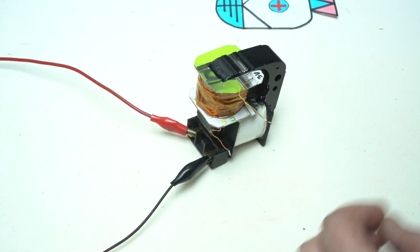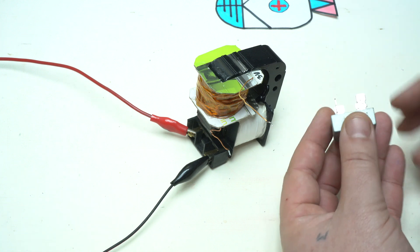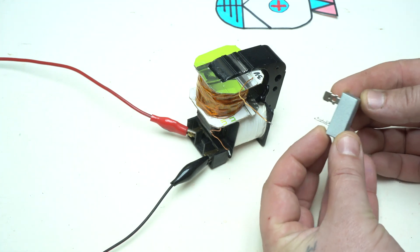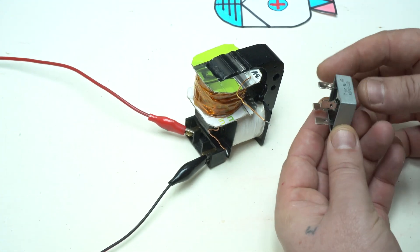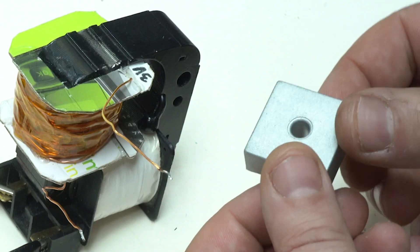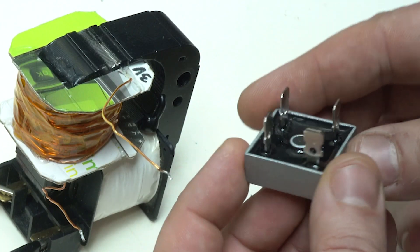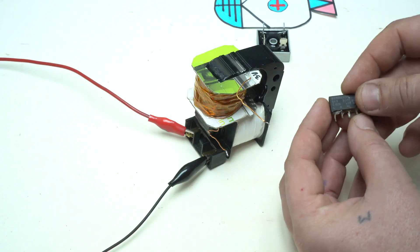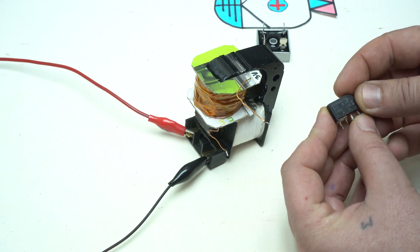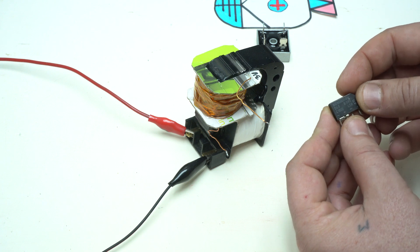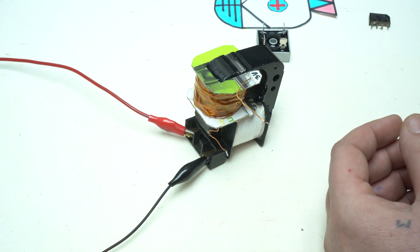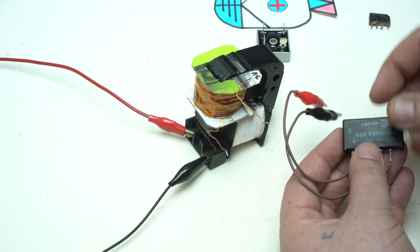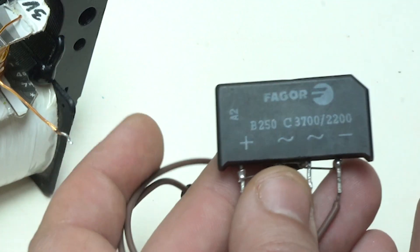And this is a 50 amp bridge rectifier. I will use this in my next project. You have a small bridge rectifier up to 1.5 amps, but I am using this bridge rectifier in this experiment.